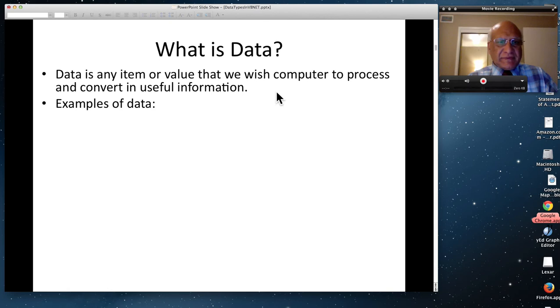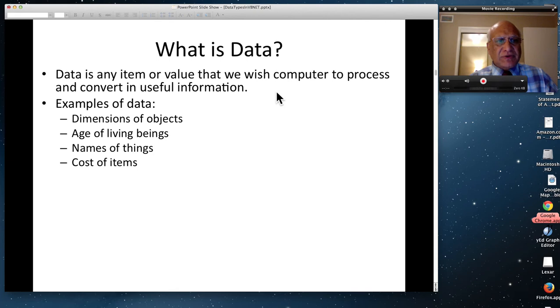These are the examples of data in real life. One is dimension of objects, circles, rectangles, solids, they all have dimensions. Age of living beings, that's another example of data. Name of things, cost of items, tax rates, distances, weather data, dates for events. And one I didn't include here I should have is yes or no to something, true or false. Those are also types of data.